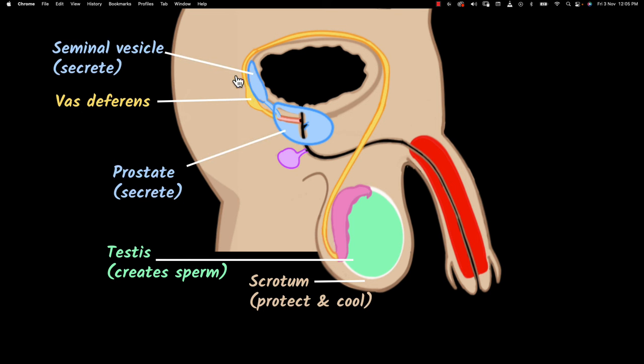We call them, this is the seminal vesicle and this is called the prostate gland. What do they do? They will add some secretions. Those secretions are the ones that are gonna give the sperms the nutrition. It's gonna give the sperm the required mobility.